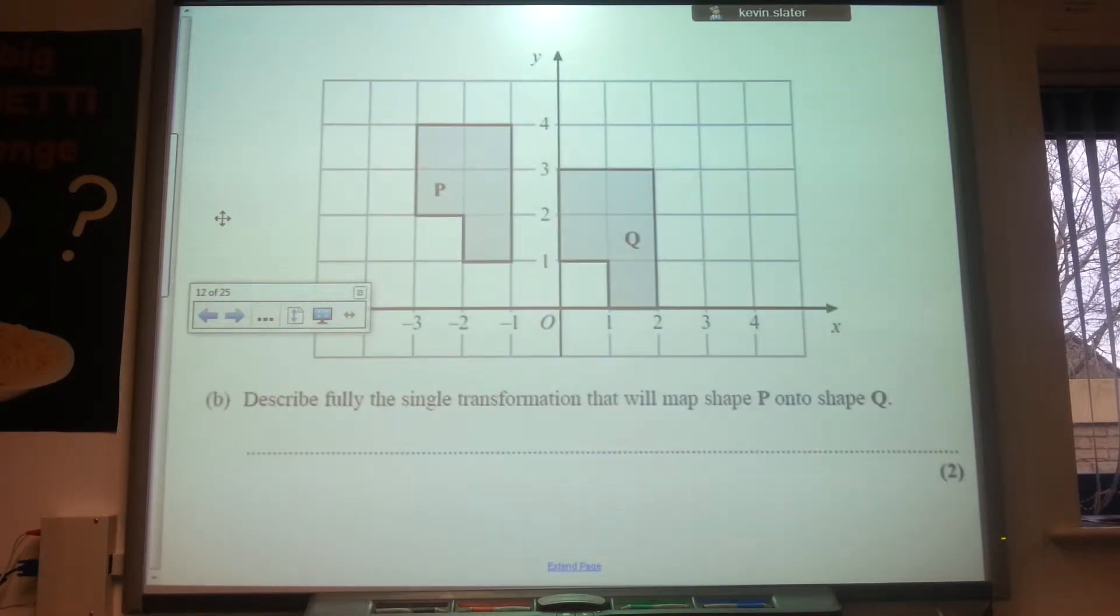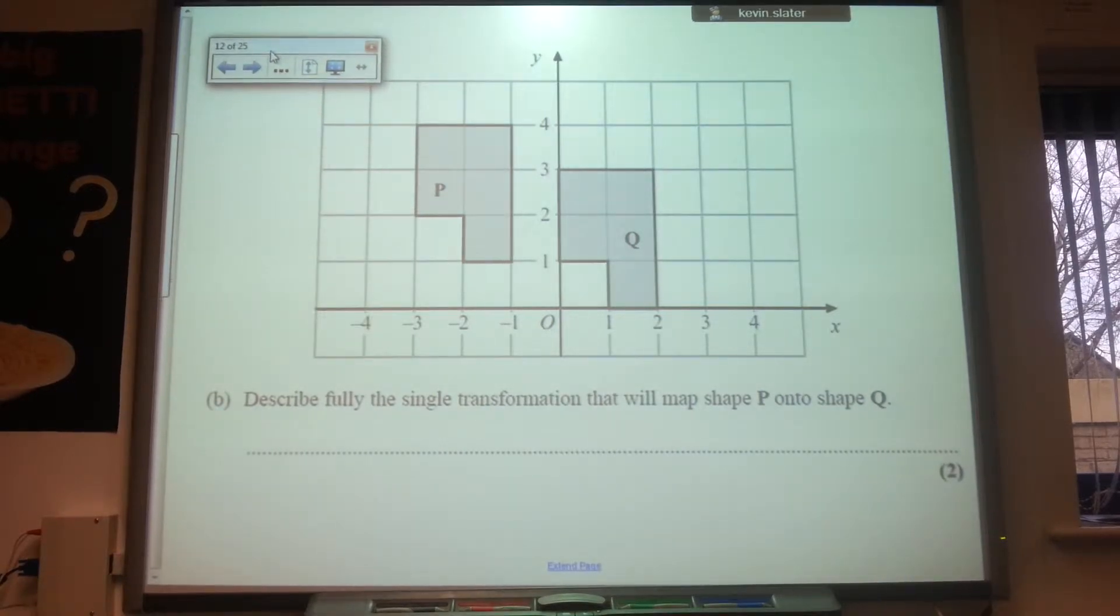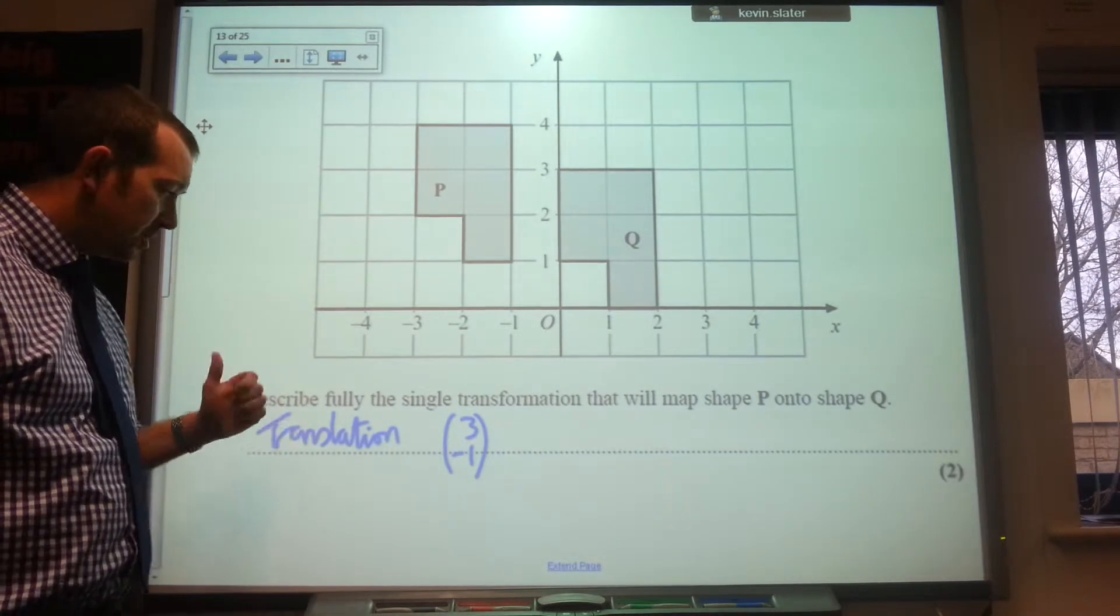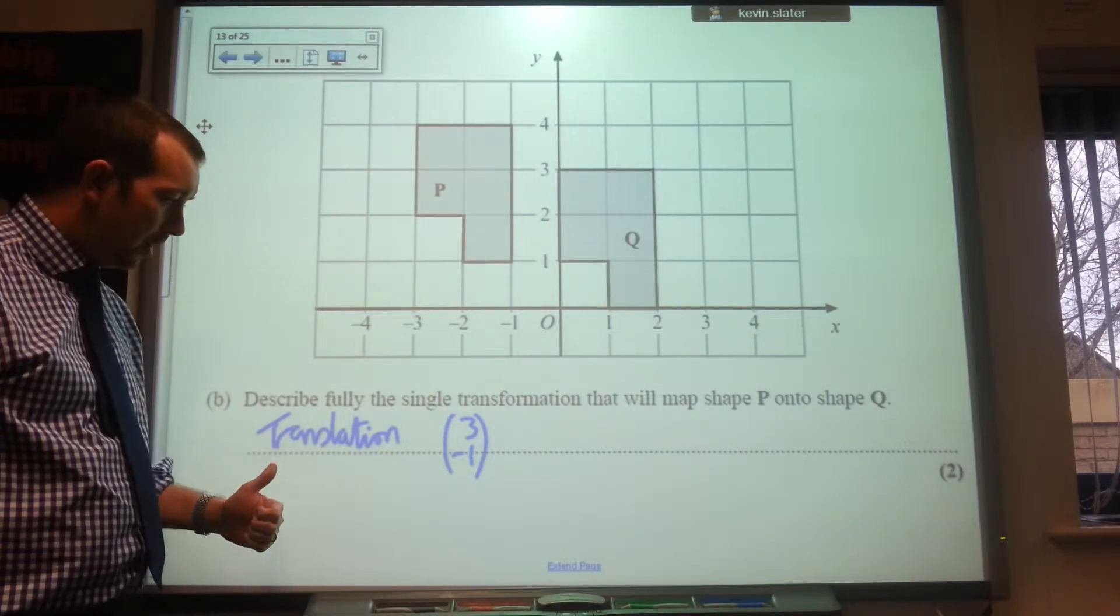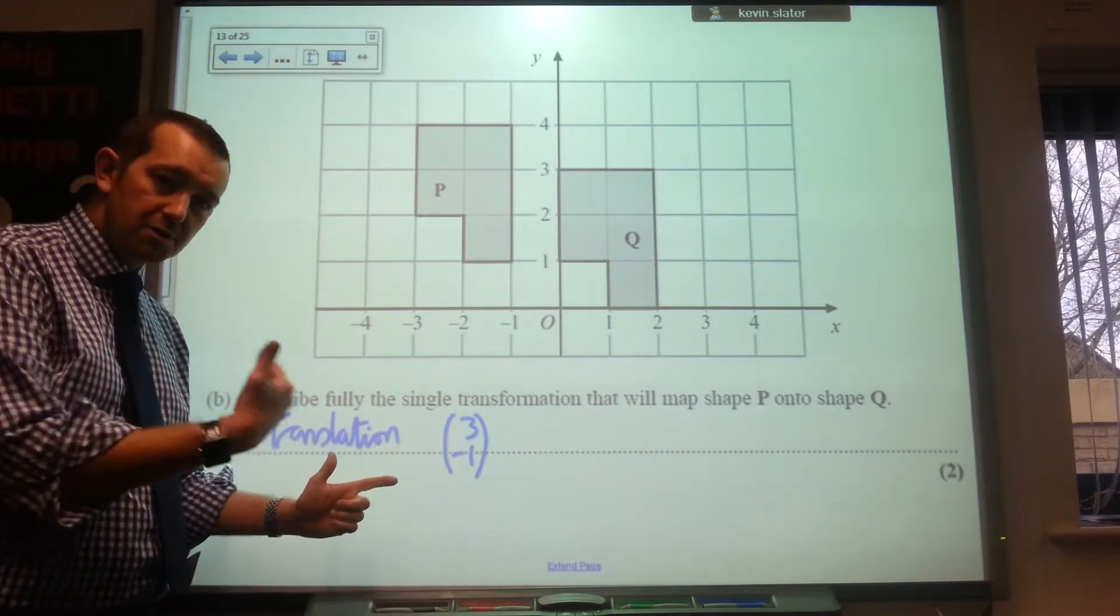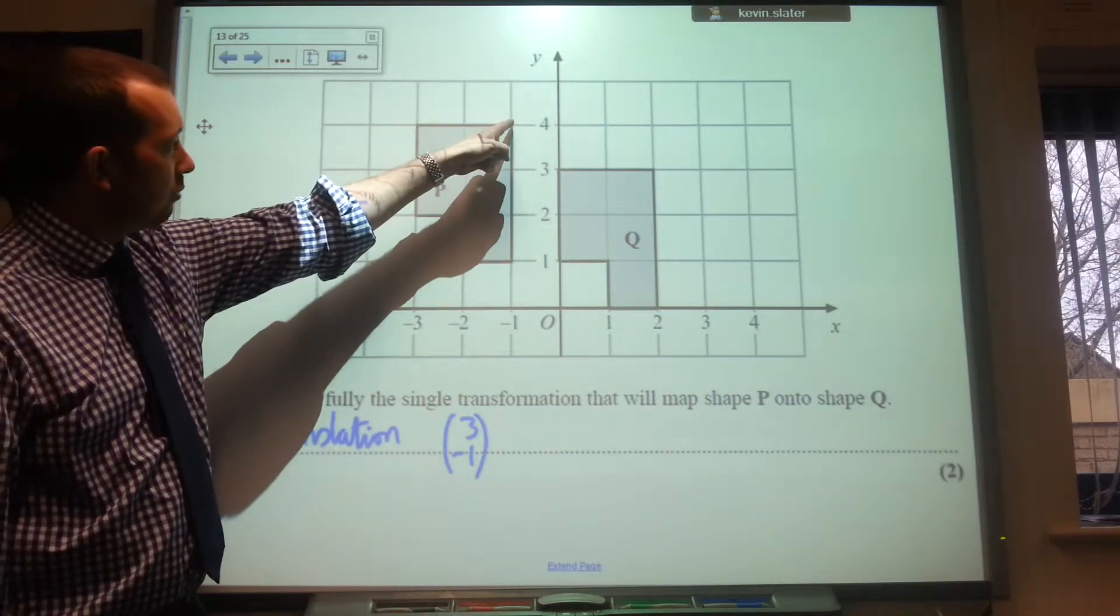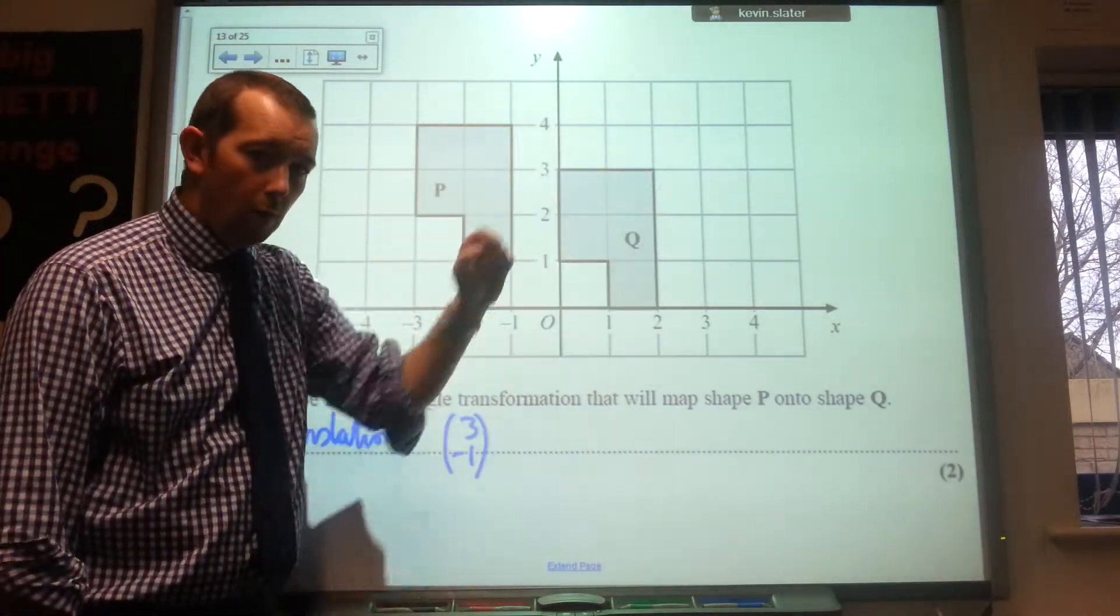Now, describe fully the single transformation that will map shape P onto shape Q. And there's your answer there. It's translation. So I've named the transformation for one mark and I've given the details. And with the translation, you need a vector. So the details there are 3, 1. It's gone across one, two, three, and down one.